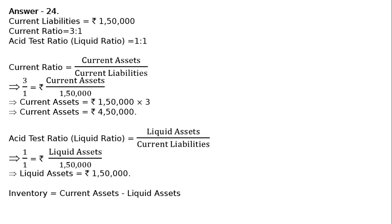Inventory is equal to current assets minus liquid assets. That is current assets Rs. 4,50,000 minus liquid assets Rs. 1,50,000, and the value of inventory is equal to Rs. 3,00,000.